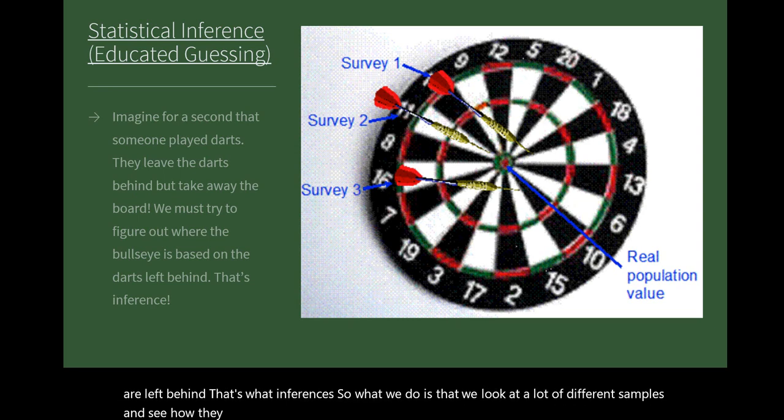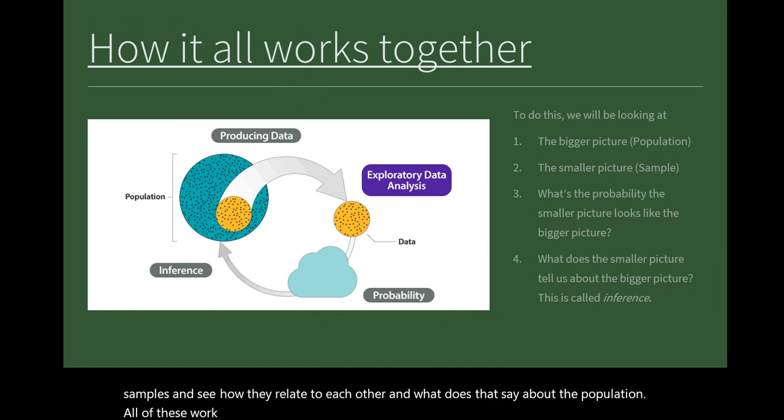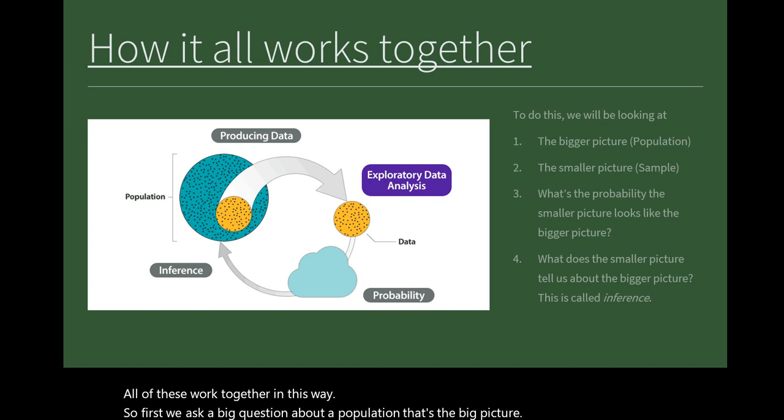All of these work together in this way: First we ask a big question about a population - that's the big picture. Next we take a smaller picture called a sample.